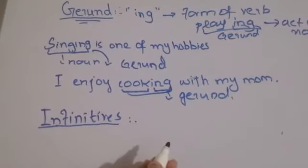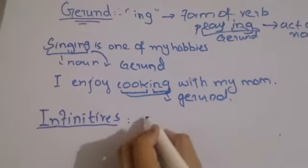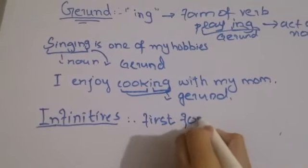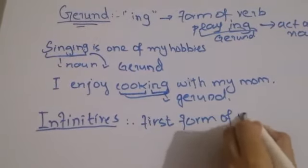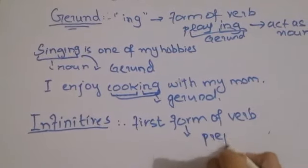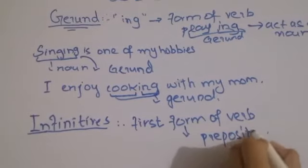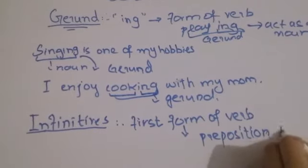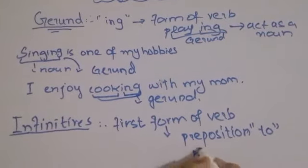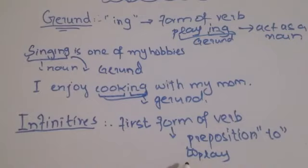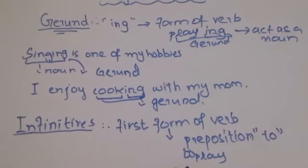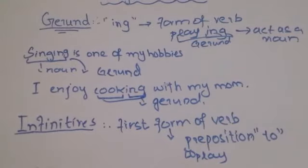In Infinitive, we always have the first form of a verb, and before that first form of verb, the preposition 'to' is used. So if there is any first form of a verb, such as 'play', it becomes 'to play' — this is how it acts as an Infinitive in a sentence.